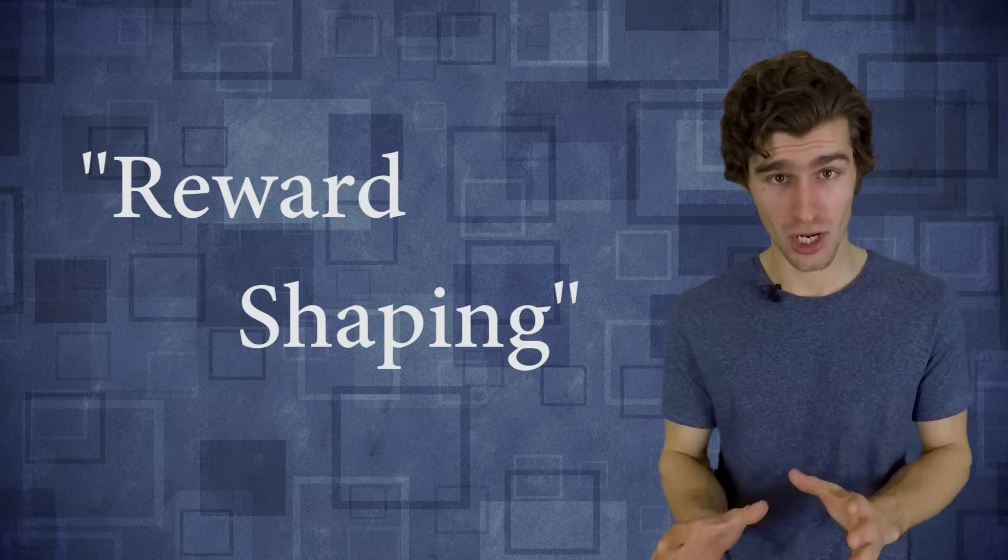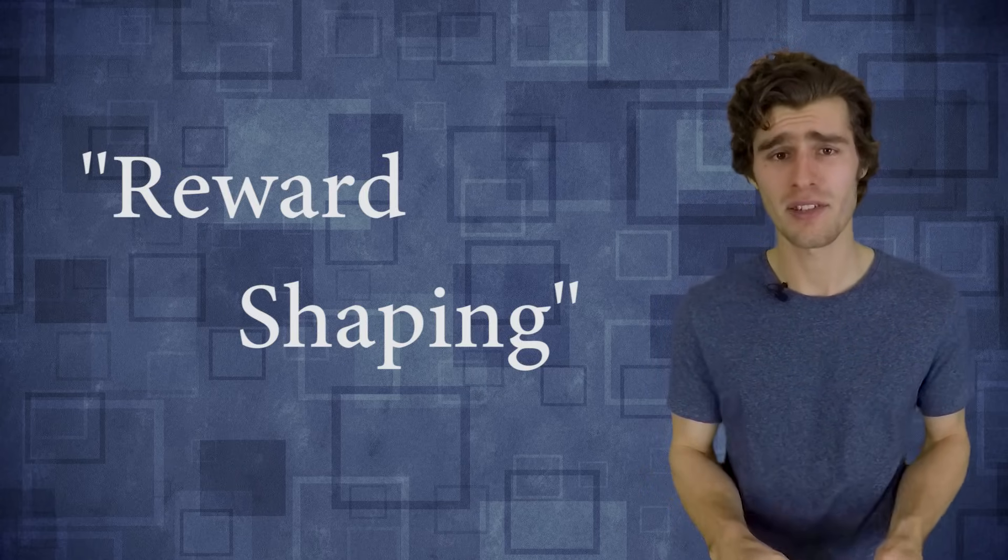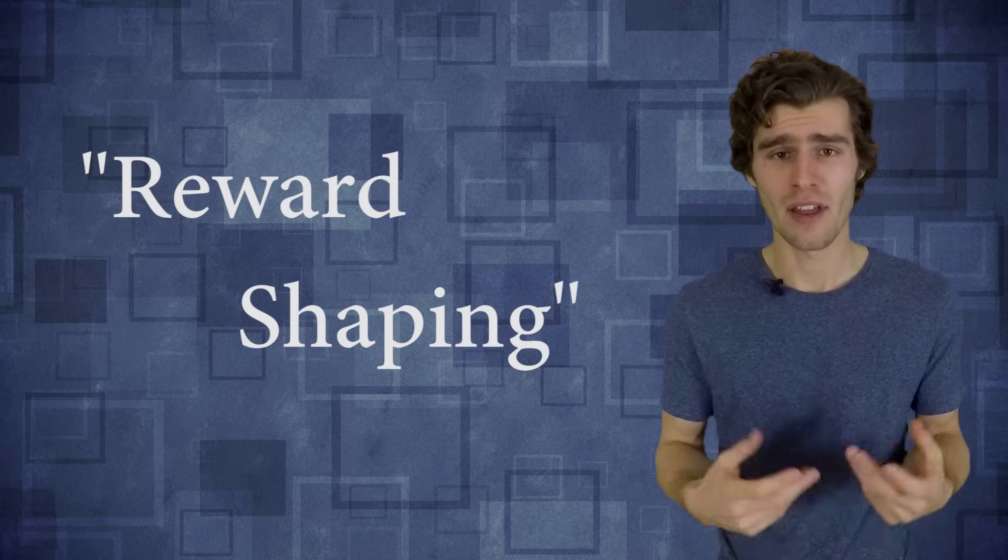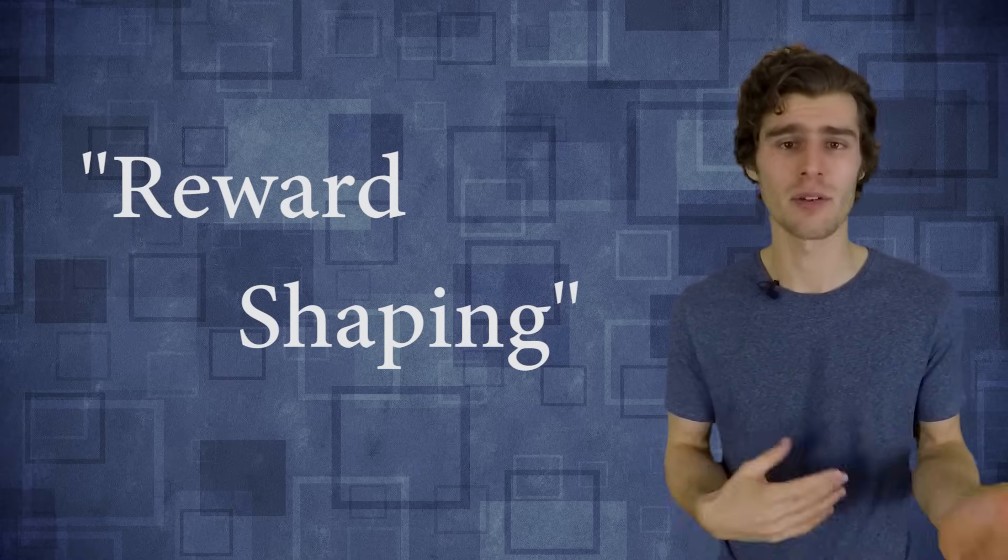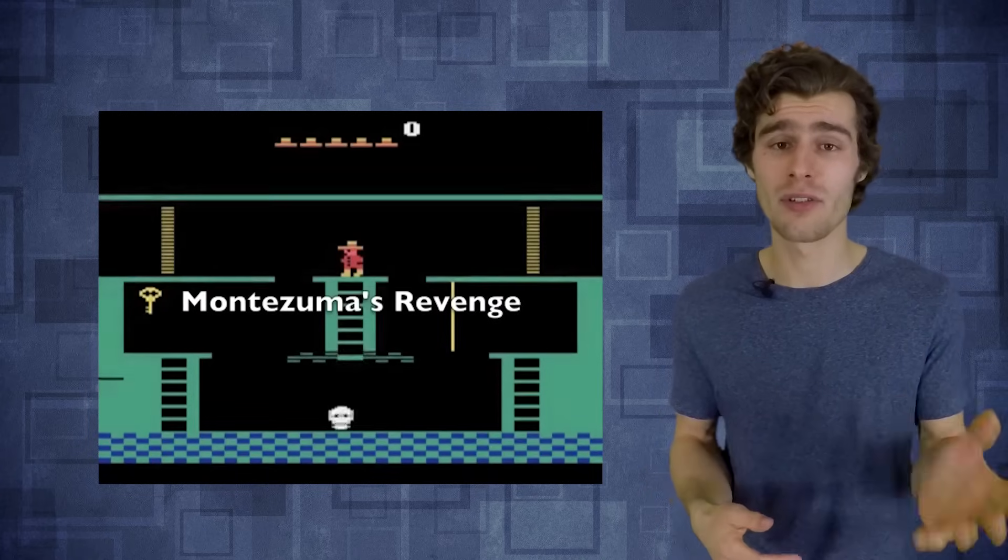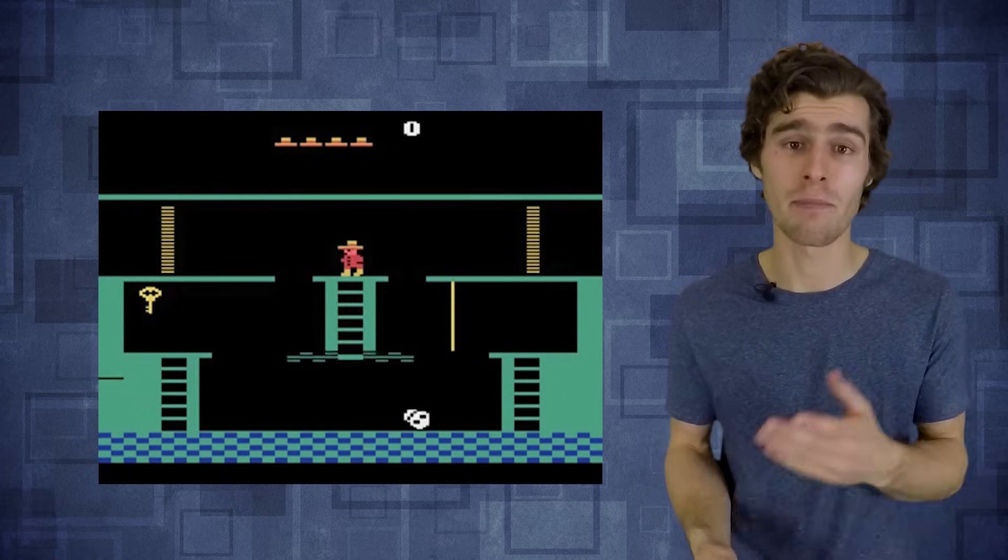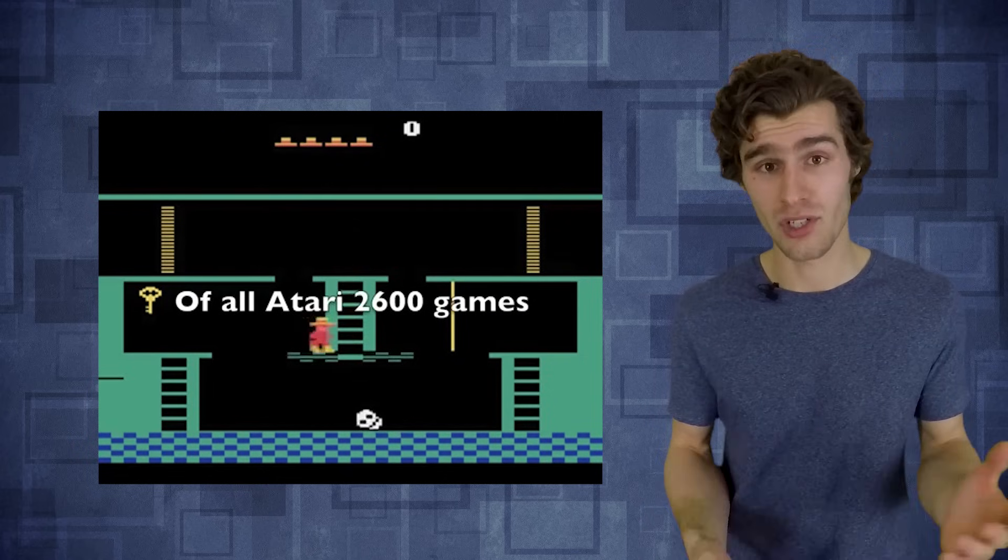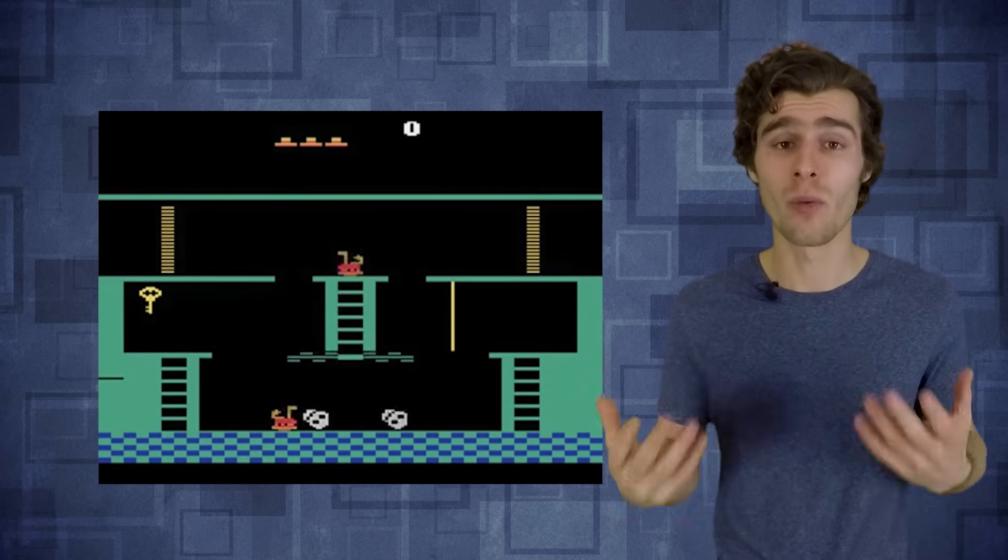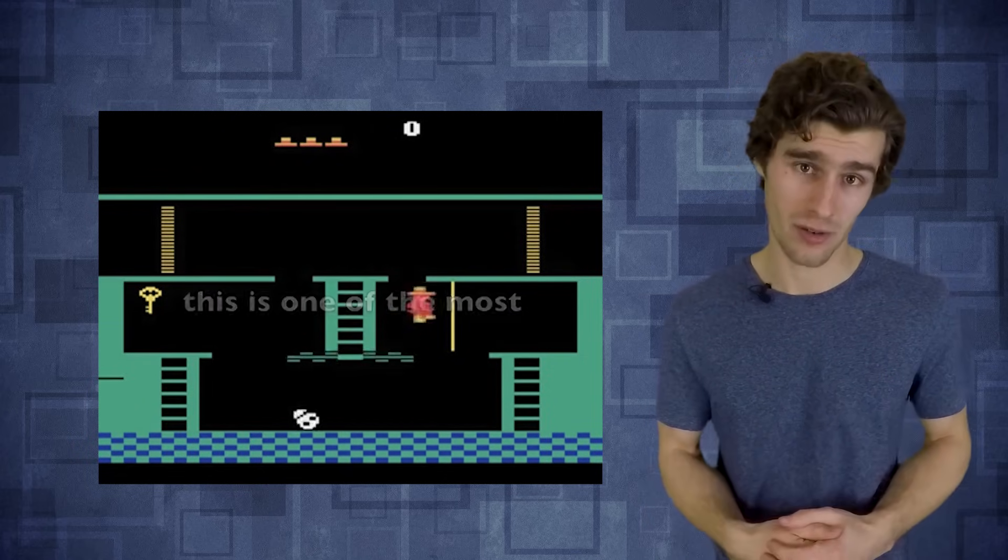And so the traditional approach to solve this issue of sparse rewards has been the use of reward shaping. So reward shaping is the process of manually designing a reward function that needs to guide your policy to some desired behavior. So in the case of Montezuma's Revenge, for example, you could give your agent a reward every single time it manages to avoid the skull or reach the key. And these extra rewards will guide your policy to some desired behavior.